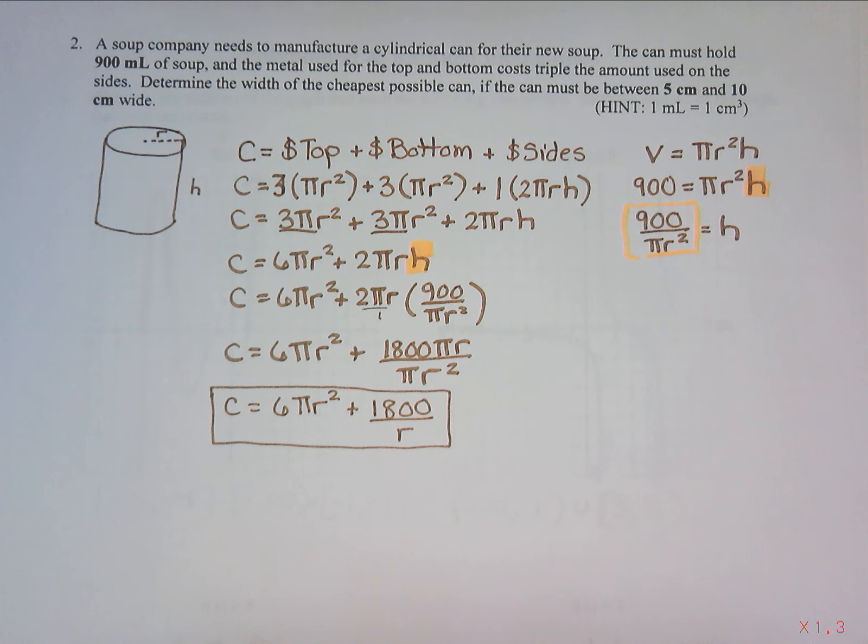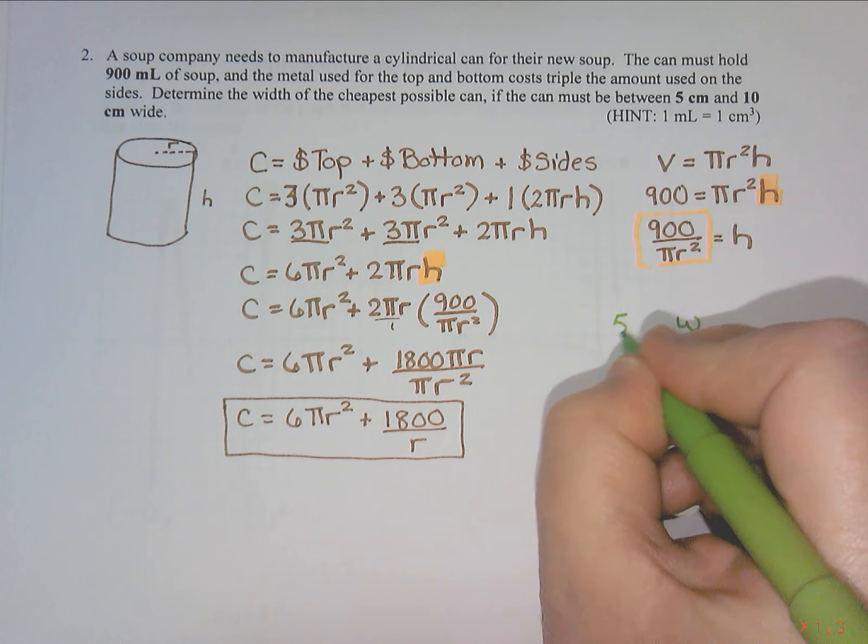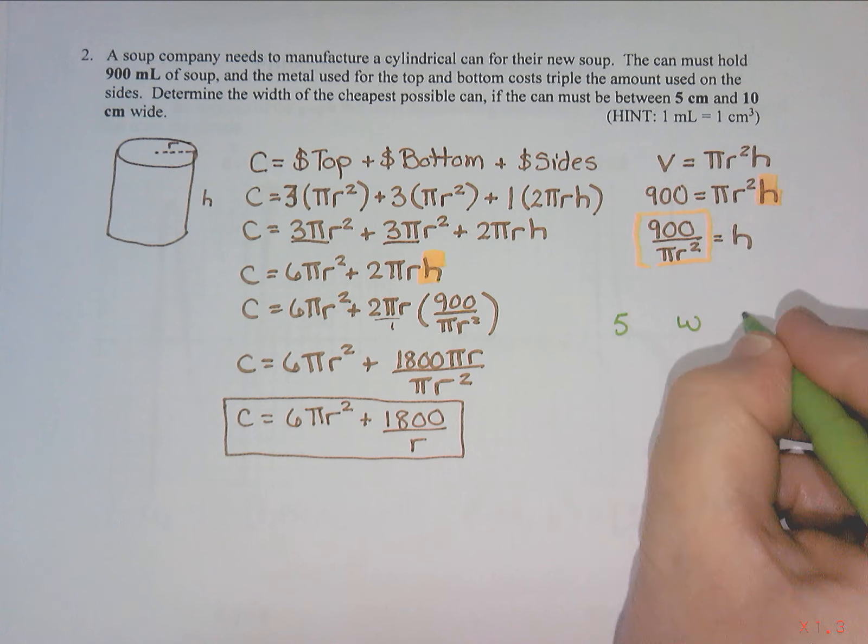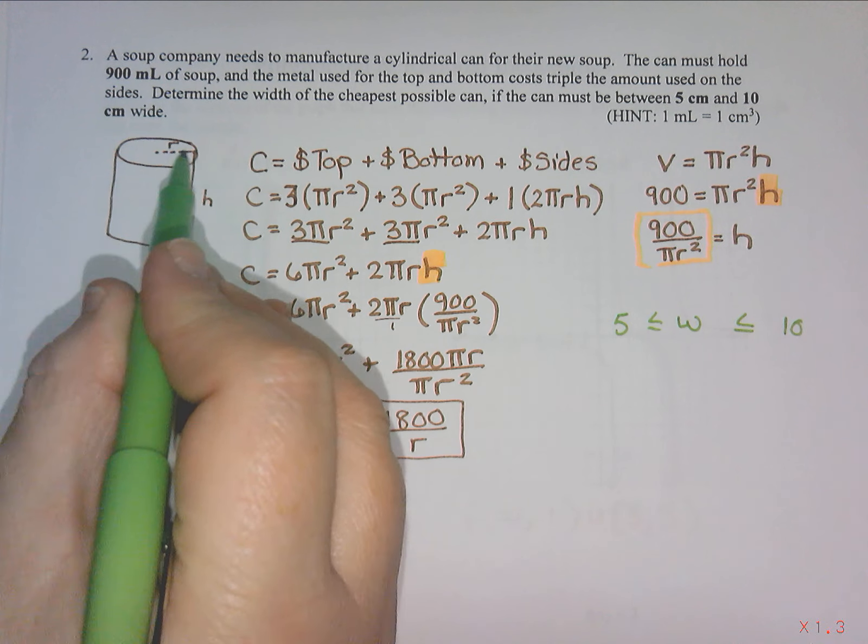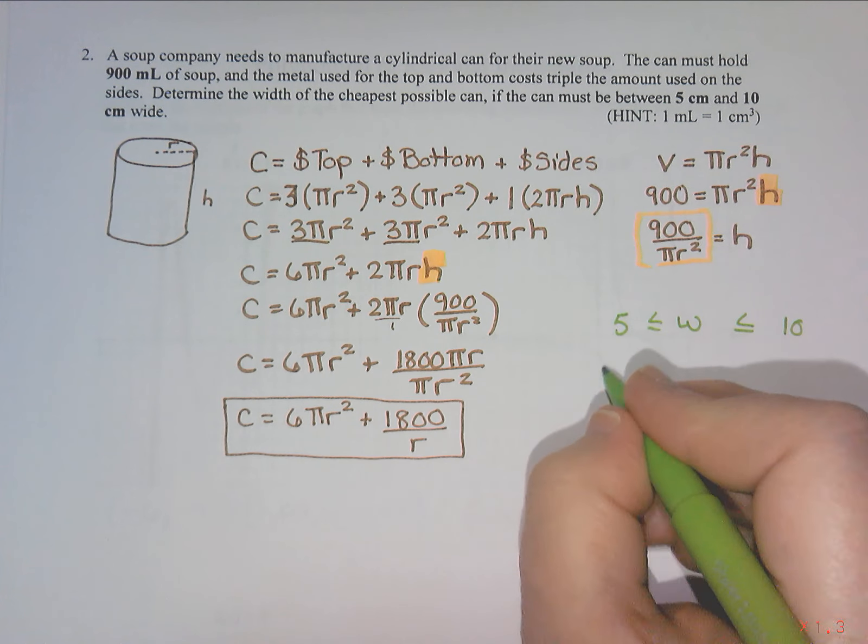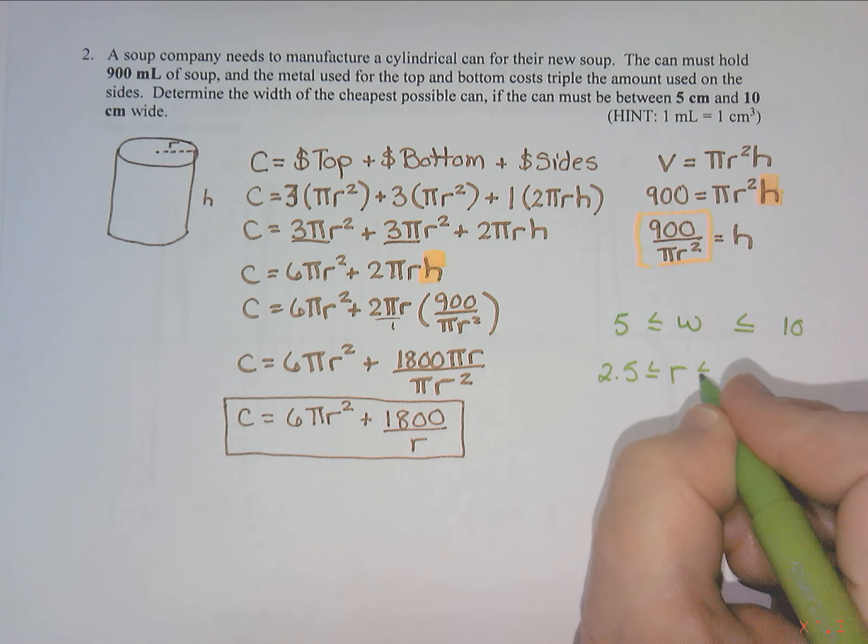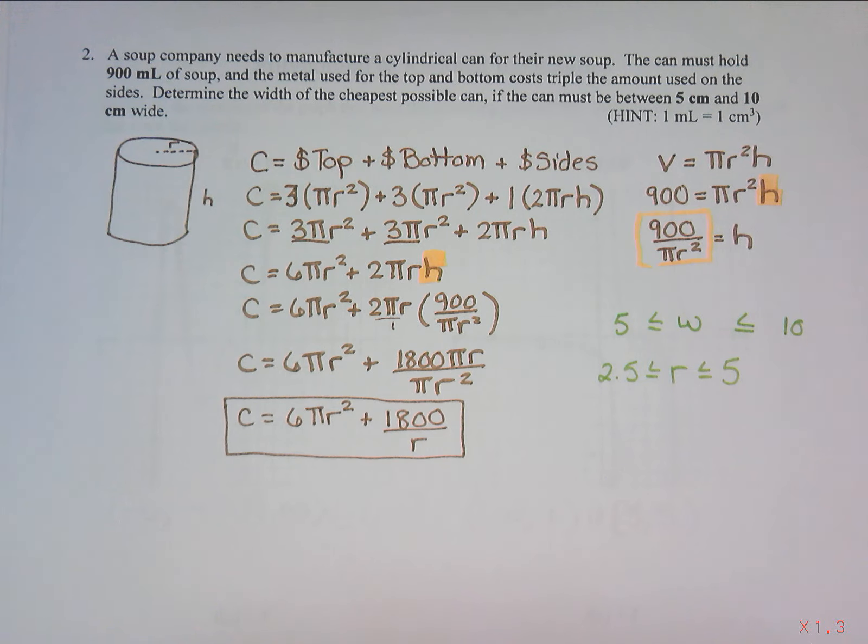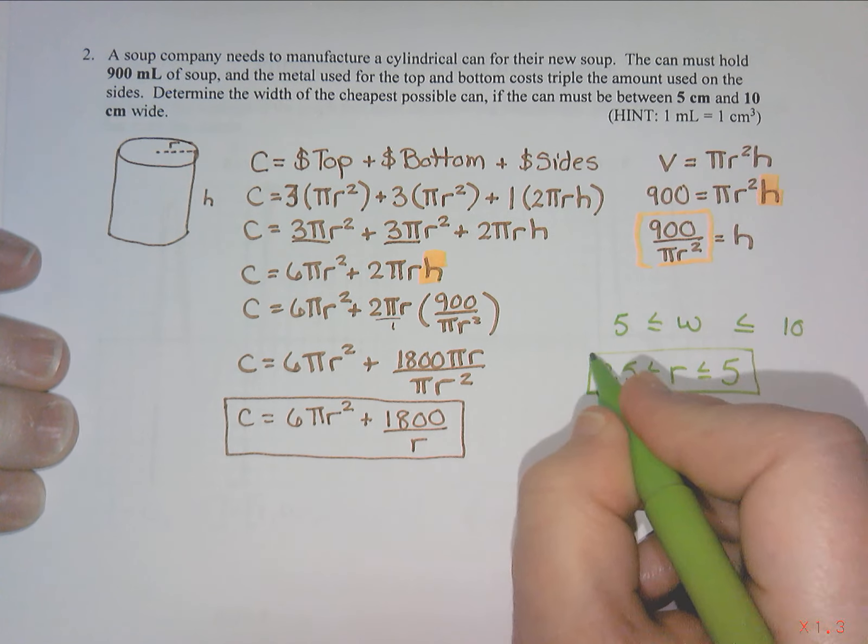If I do top times top, bottom times bottom, this gives me 1800 pi r divided by pi r squared. So the pi's divide out as well as one of the r's. This is 6 pi r squared plus 1800 over r. From here I am going to do my domain. The domain told me the width needs to be between 5 and 10, but we're doing radius. The radius is half of the width, so half of 5 is 2.5 and half of 10 is 5.